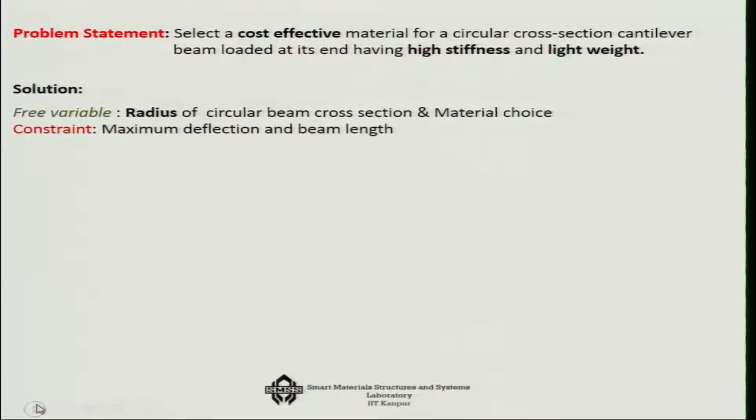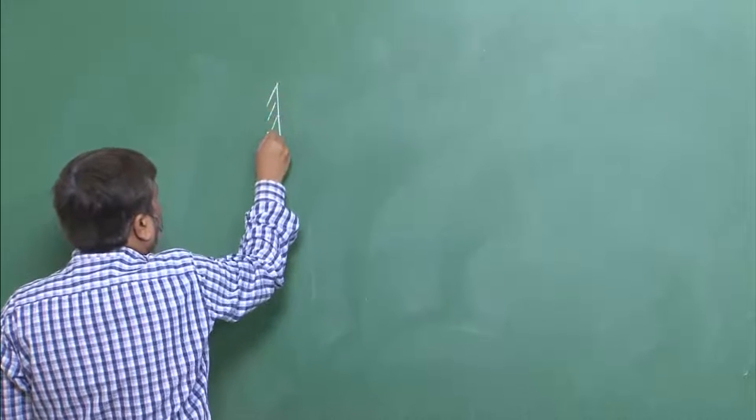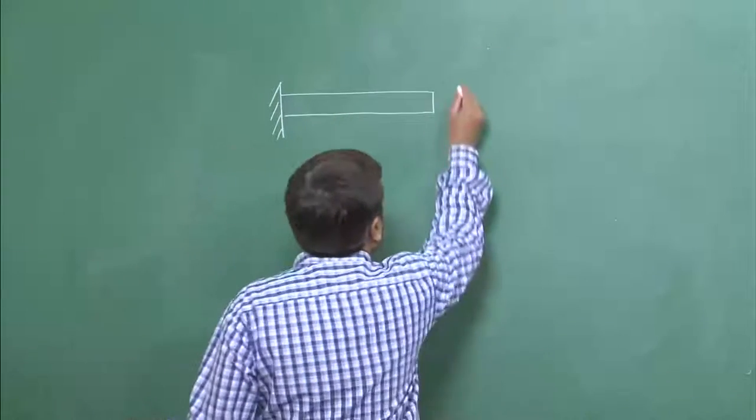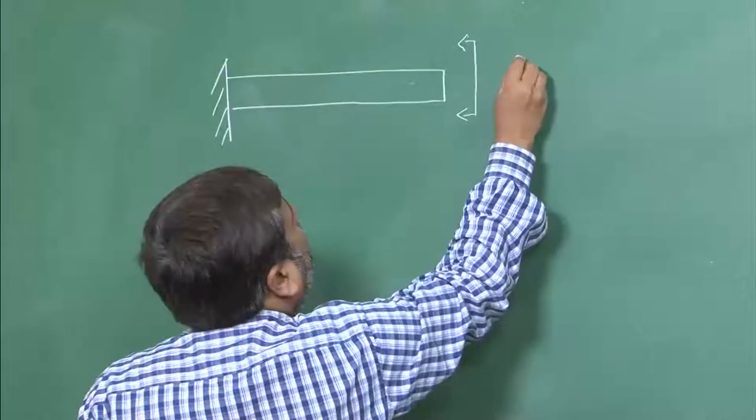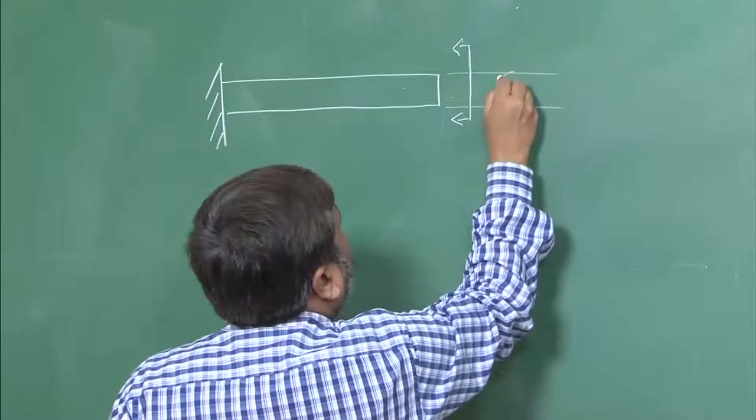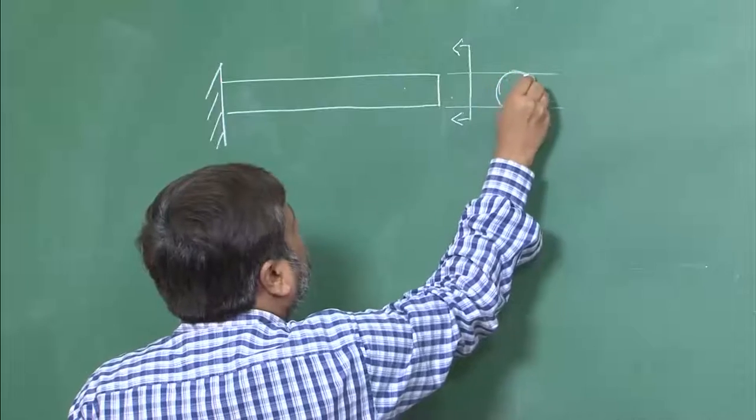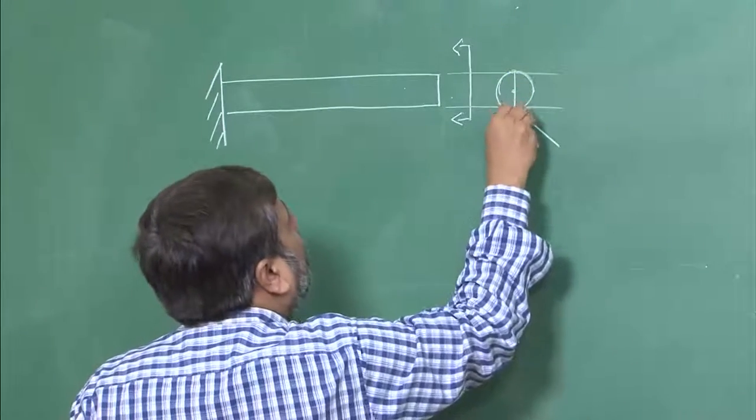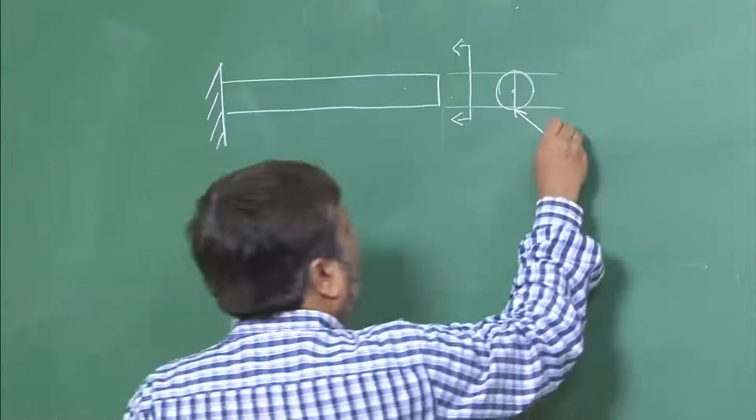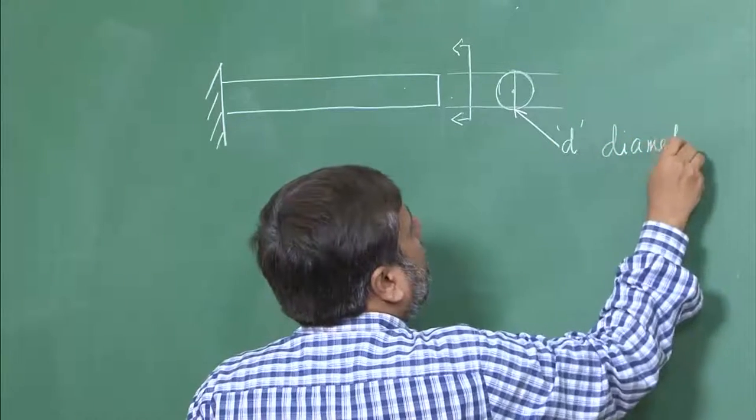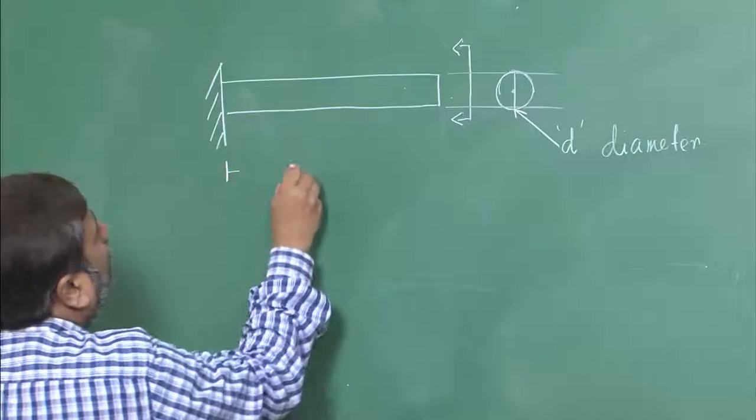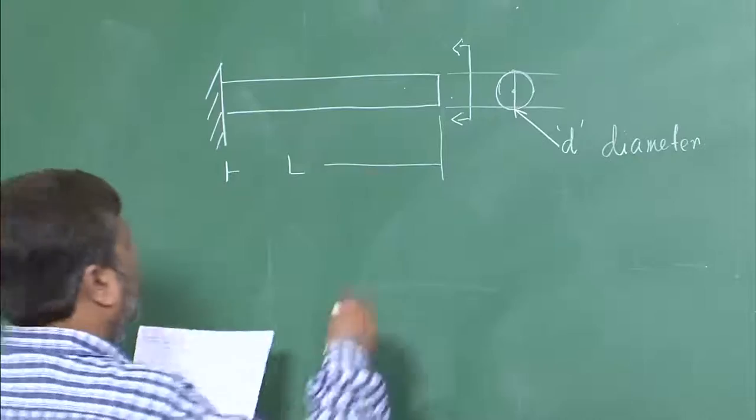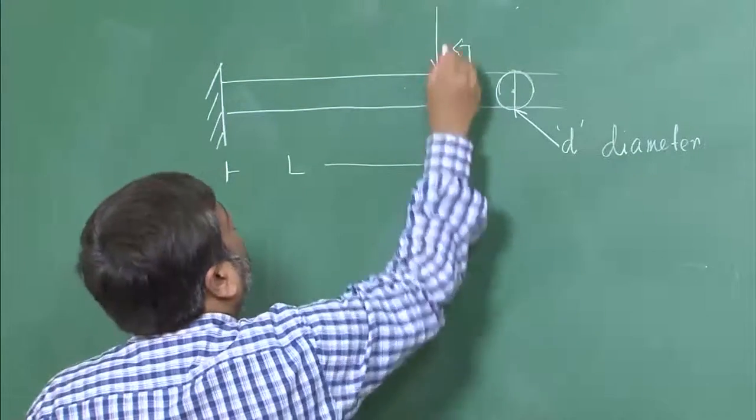To begin with, what is important for us is a cantilever beam, circular cantilever beam. If I look at it from this direction, then it is a circular cross section. The diameter D of this circular cross section is a free variable. This is a cantilever beam and the span of the beam is the length L. What is the loading condition? It is carrying an end load F.